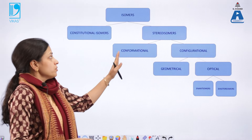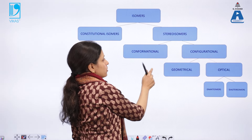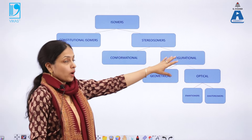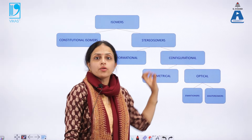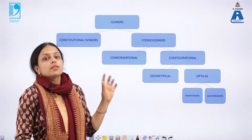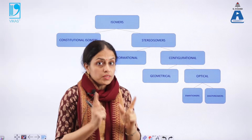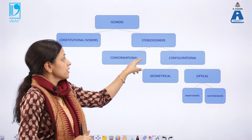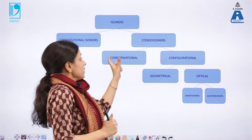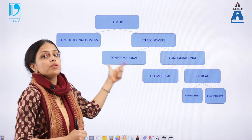Stereoisomers can be classified into conformational and configurational isomers. Configurational isomers are the ones which cannot be interconverted into each other through bond rotation, whereas conformational isomers are the ones which can be easily interconverted into each other by rotation around the single bond. This is the basic difference between them — configurational isomers require more energy while conformational isomers require minimum energy.